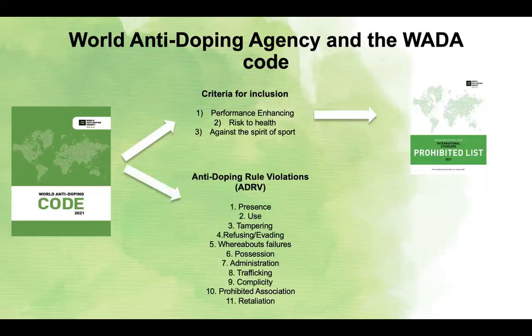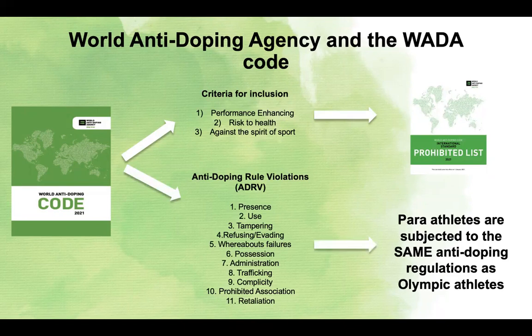Athletes are bound under 11 anti-doping rule violations, with para-athletes subjected to the same anti-doping regulations as Olympic athletes. However, there are two para-specific cheating methods that are currently not in the WADA code, and which we focus on today.